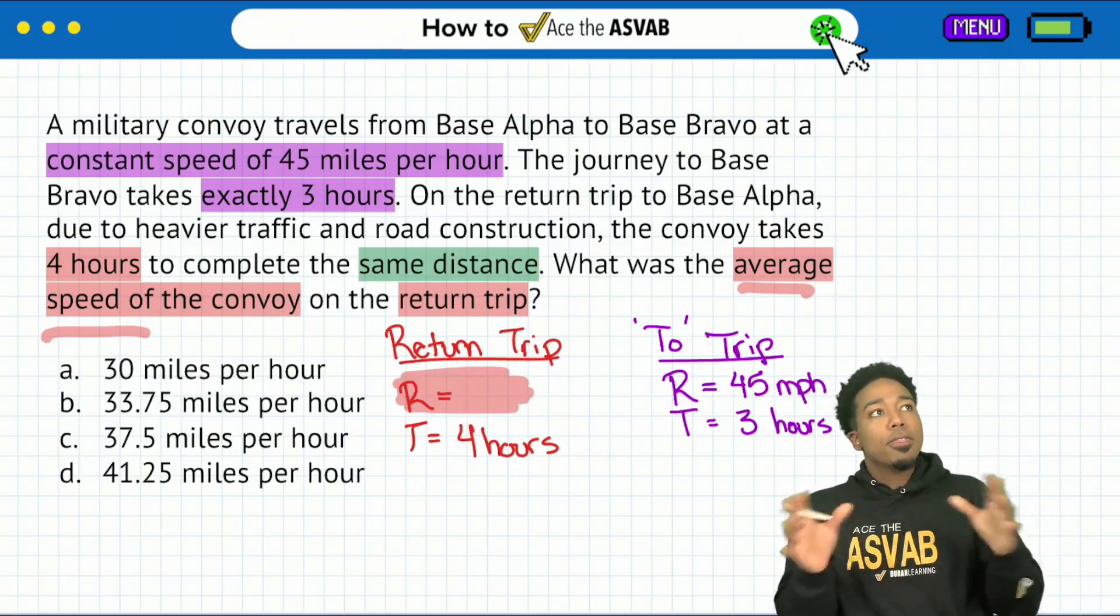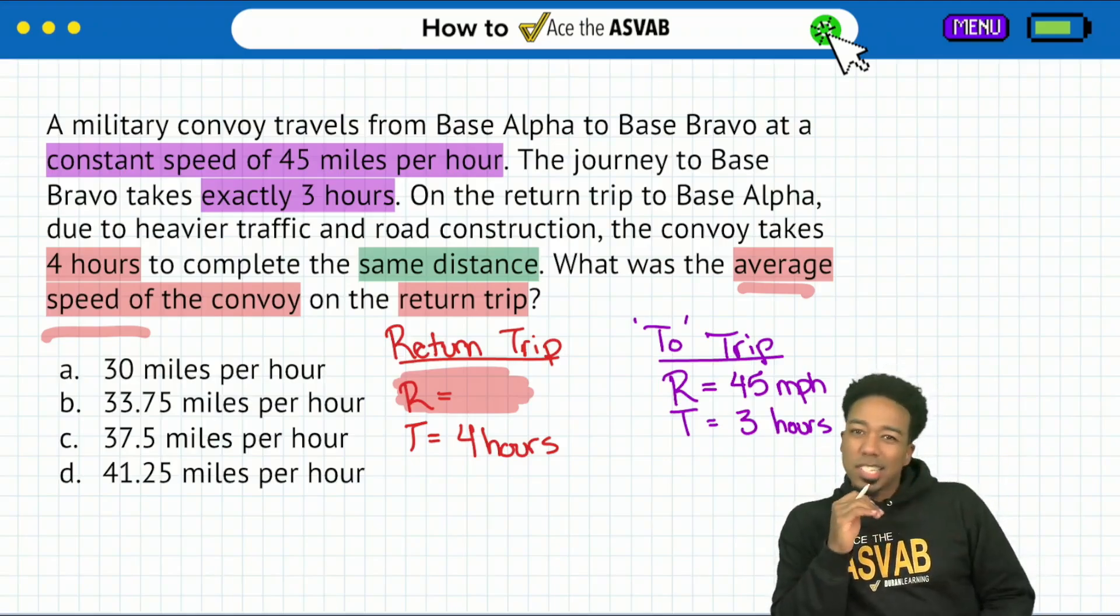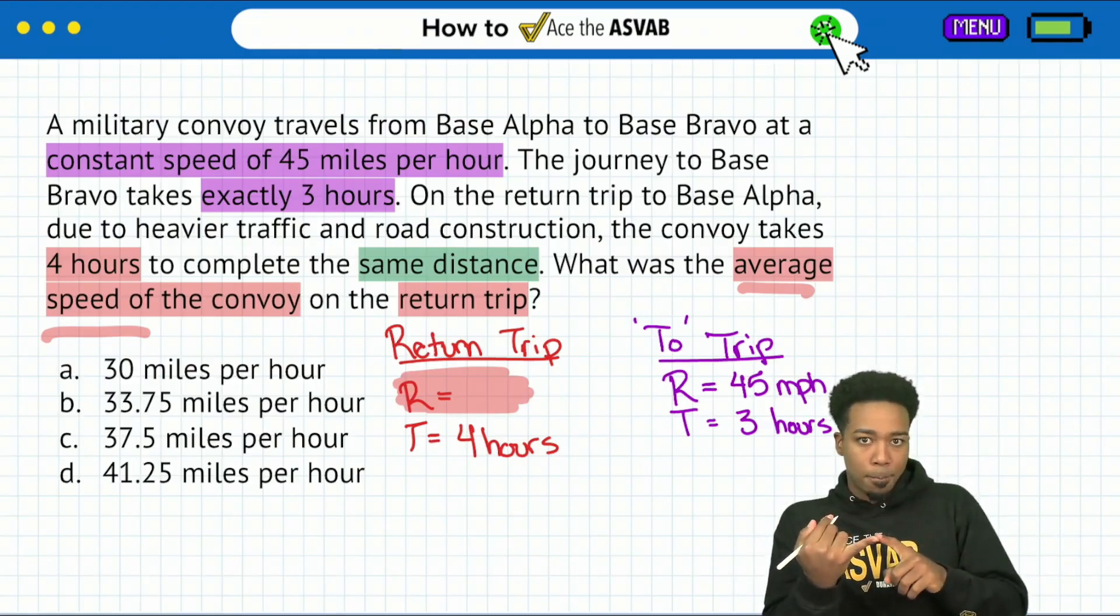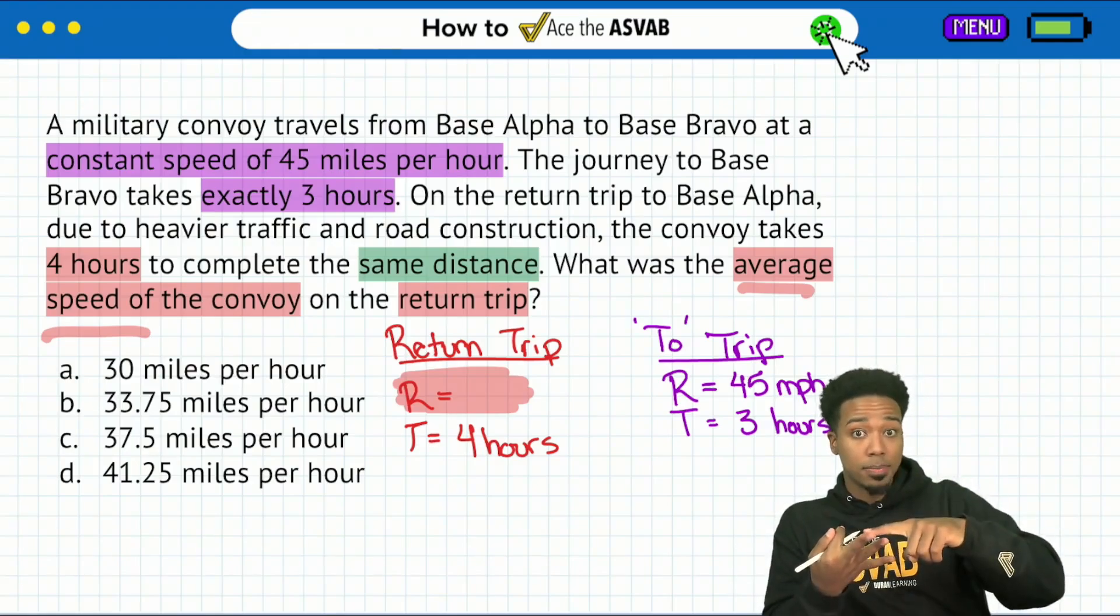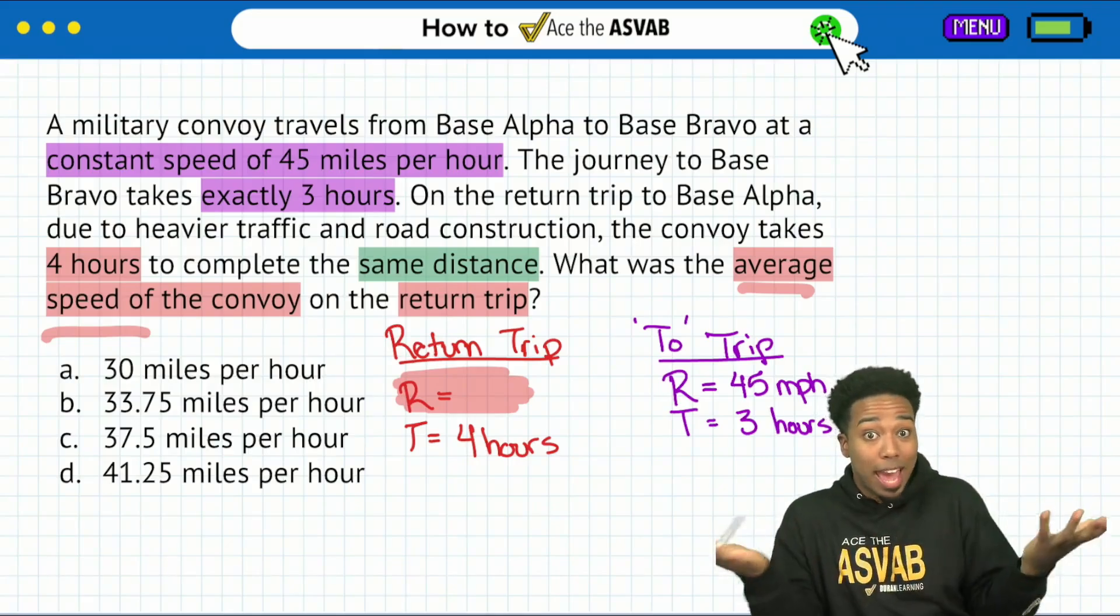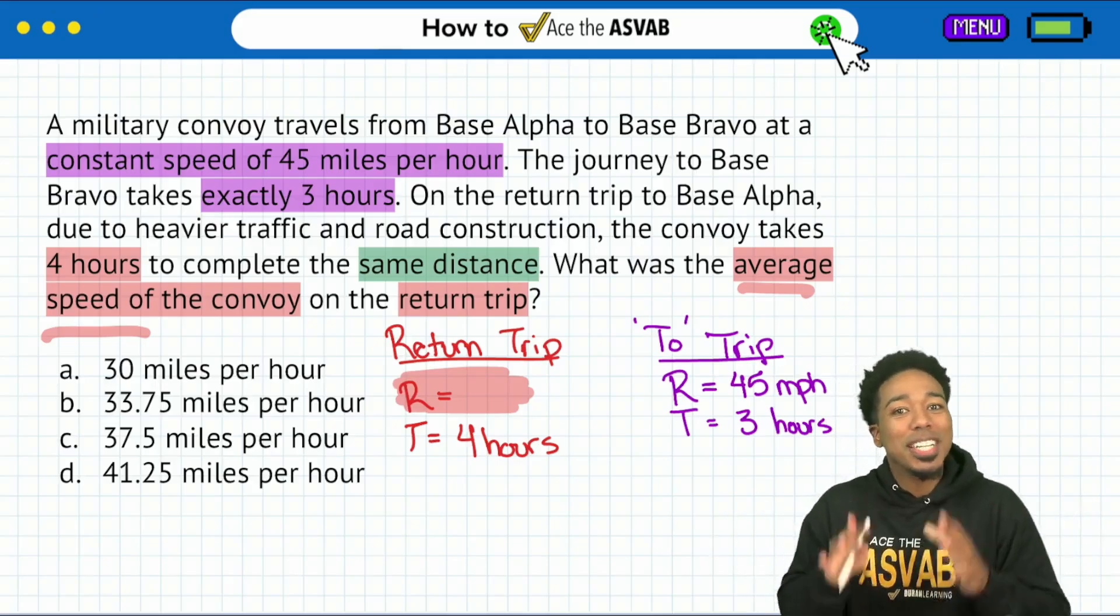We are trying to find the rate for the return trip. So if you're thinking about this and you notice that this is distance rate time, well, if we're trying to find the rate, we need the time and the distance.